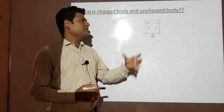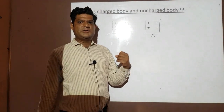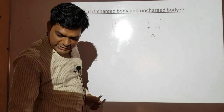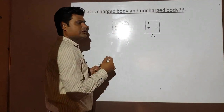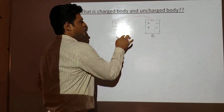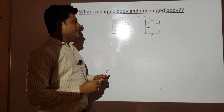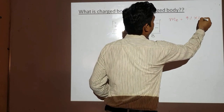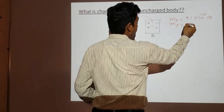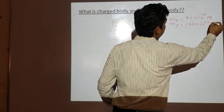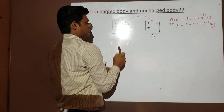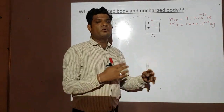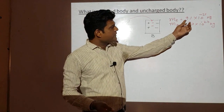Due to some process such as friction, two charges from body A transfer to body B. The mass of an electron is 9.1 × 10⁻³¹ kg and the mass of a proton is 1.67 × 10⁻²⁷ kg. As charged particles transfer from one body to another, the first body may lose weight and the second body may gain weight, depending on whether electrons or protons are transferred.